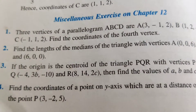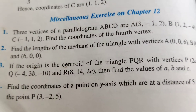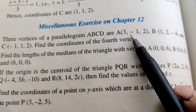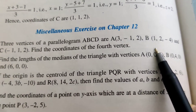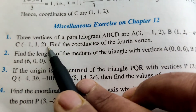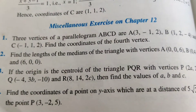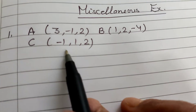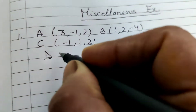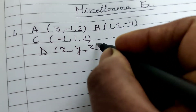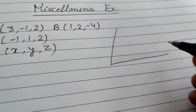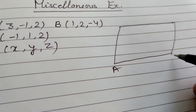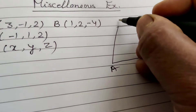Miscellaneous exercise on Chapter 12, Three-Dimensional Geometry. Question number 1: Three vertices of a parallelogram ABCD are A(3, -1, 2), B(1, 2, -4), and C(-1, 1, 2). Find the coordinates of the fourth vertex. Let the coordinates of D be (x, y, z). We know that the diagonals of a parallelogram bisect each other.